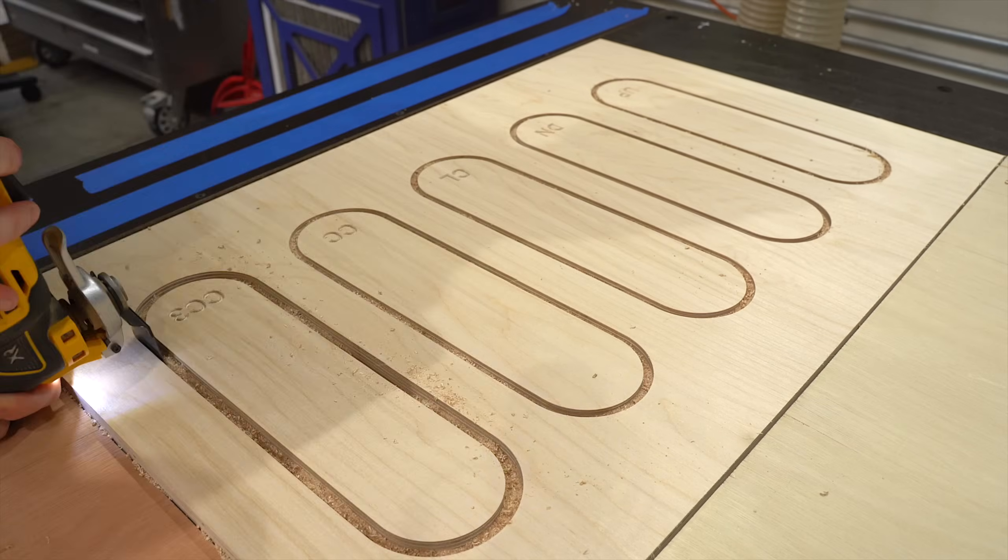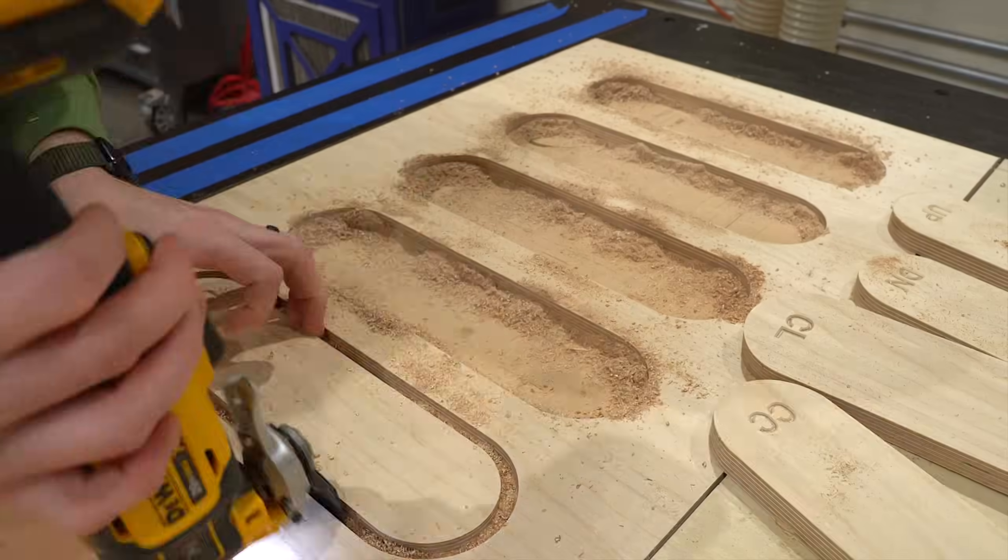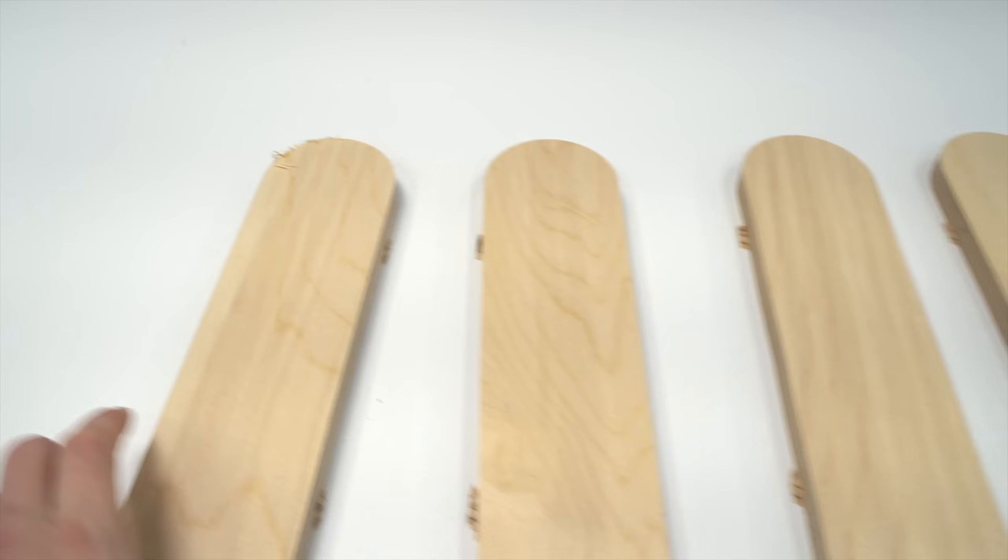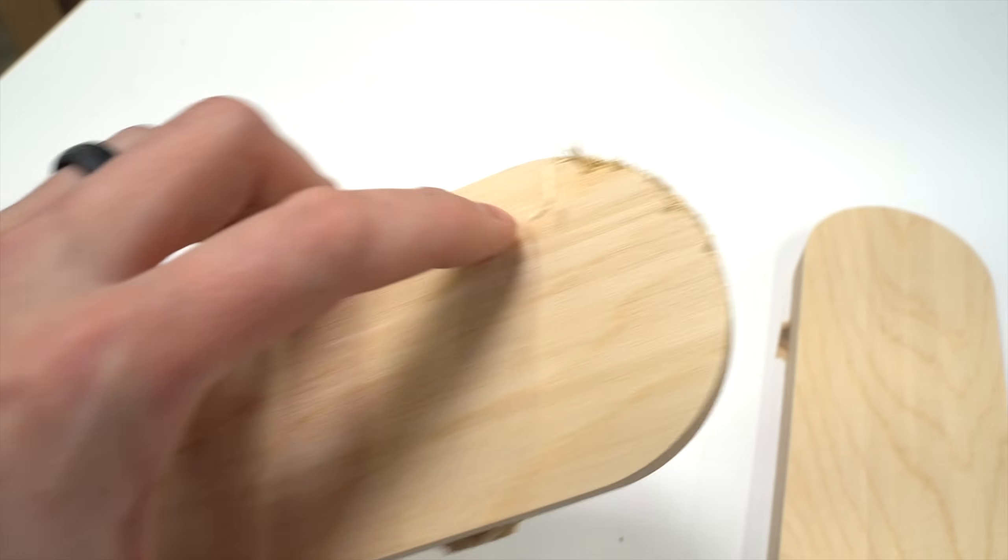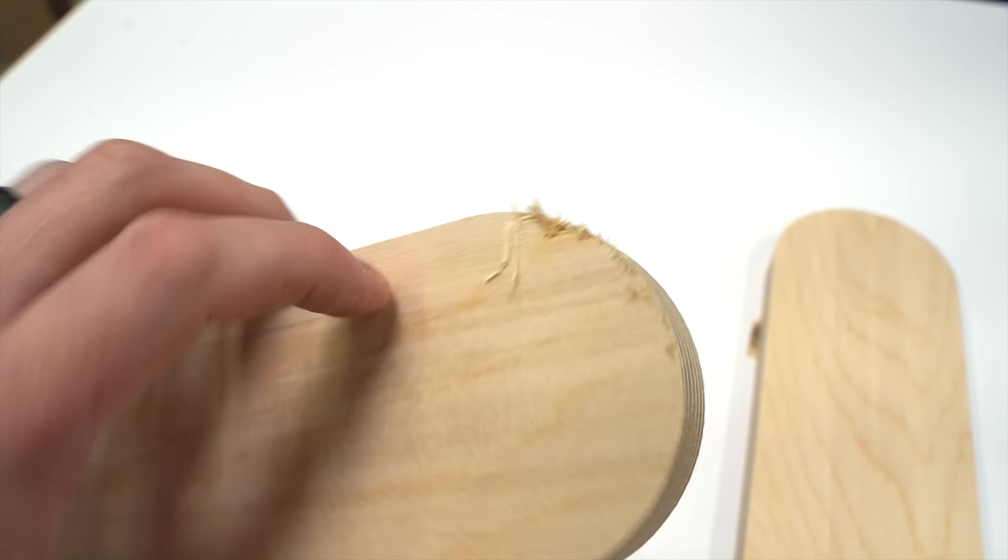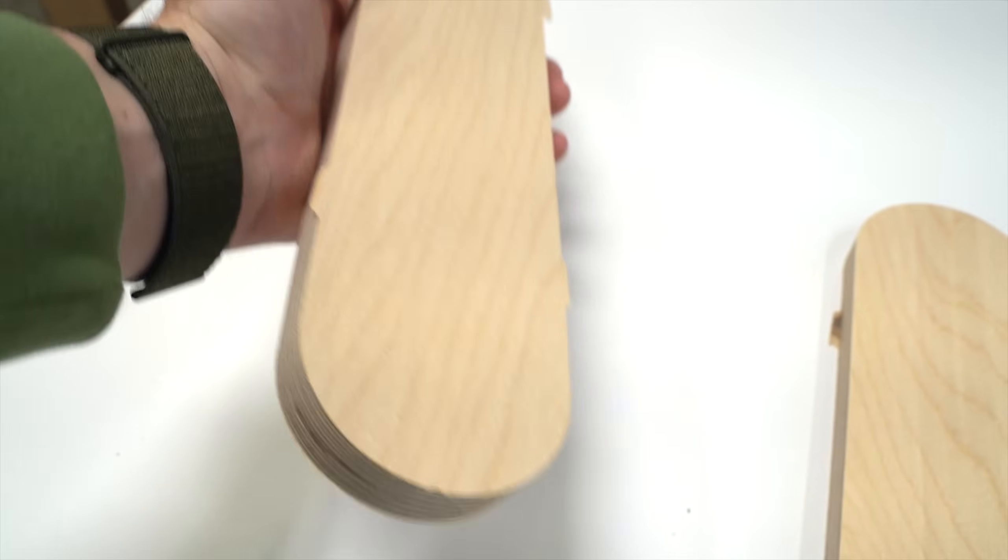Some quick work for the multi-tool to get those tabs disconnected and pick out these parts. Upcut, see some tear out on the edge there. The top, that's expected because it's pulling the fibers up. The bottom edge is going to turn out pretty good.